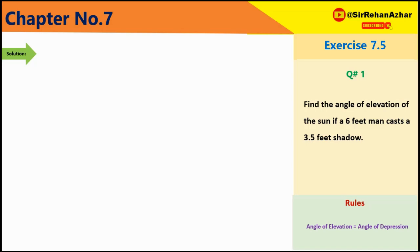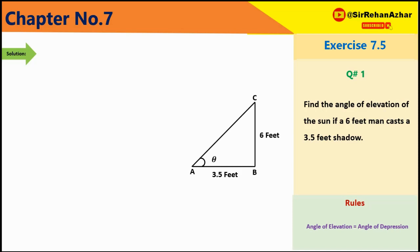सबसे पहले statement से question की figure draw करते हैं। एक 6 foot का आदमी है और उसका साया 3.5 feet है। Angle of elevation जो है वो जमीन से सूरज का बनेगा और इसको हमने theta कहा है। From figure: BC = 6 feet, AB = 3.5 feet, theta unknown है।